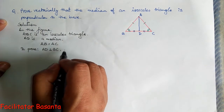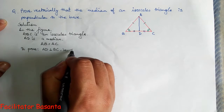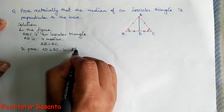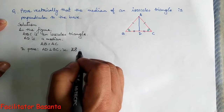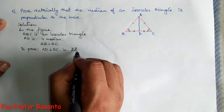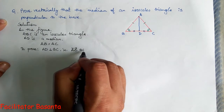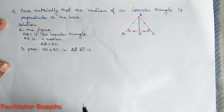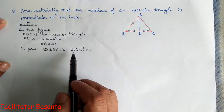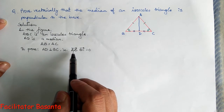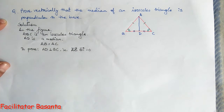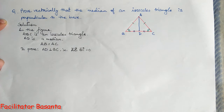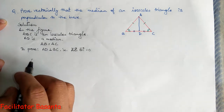To prove that AD is perpendicular to BC, we need to show that the dot product of AD vector and BC vector equals zero. If we can show that this scalar product of AD vector and BC vector is zero, then the statement is proved.